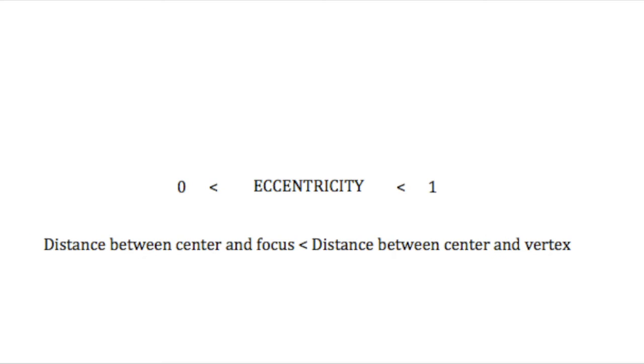Eccentricity of an ellipse is always between 0 and 1, but not equal to 0 or 1, because the distance between the center and the focus is less than the distance between the center and the vertex.